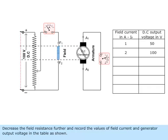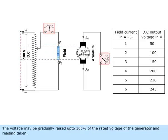Decrease the field resistance further and record the values of field current and generator output voltage in the table as shown. The voltage may be gradually raised up to 105% of the rated voltage of the generator and readings taken.